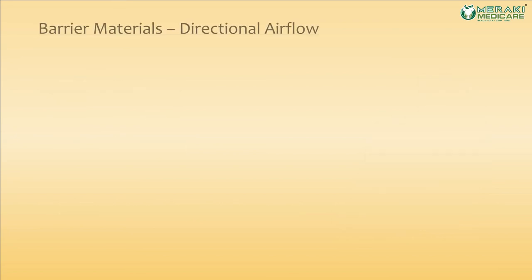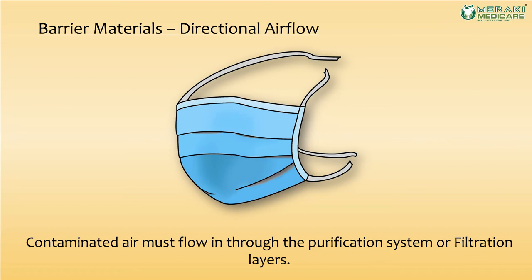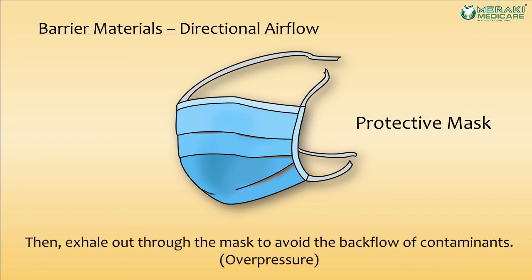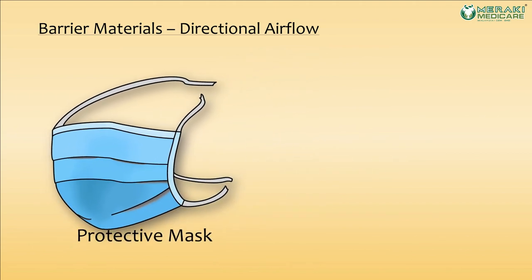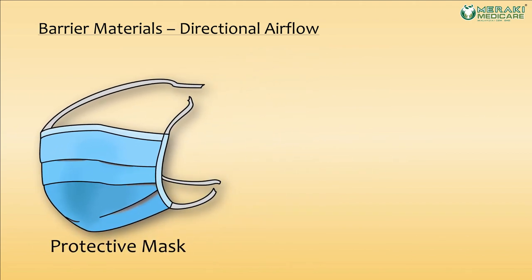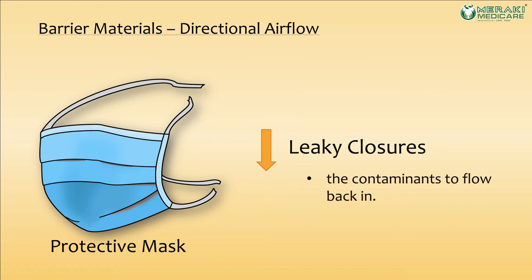Some PPE barrier materials use a directional airflow system. Contaminated air must flow in through the purification systems or filtration layers, such as the protective mask, then exhale out through the mask, creating overpressure which helps prevent the backflow of contaminants. When wearing a protective mask or any PPE using a directional airflow system, it is best to minimize leaky closures to reduce the potential for contaminants or hazardous substances to flow back to the individual.